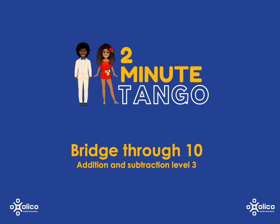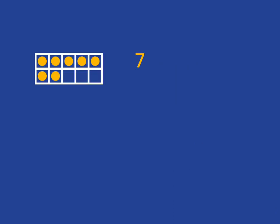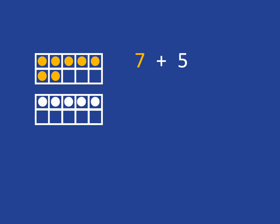We want to use the make 10 strategy to get faster at addition. Imagine I want to add 7 and 5. I could do this by counting up: 7, 8, 9, 10, 11, 12. But I want to get faster, and I'm going to use the make 10 strategy to enable me to do this.